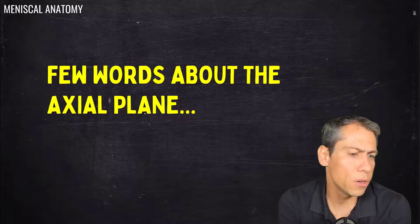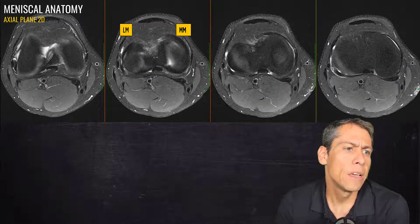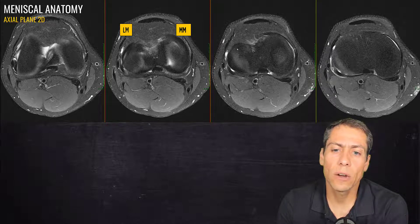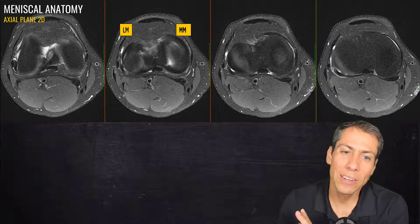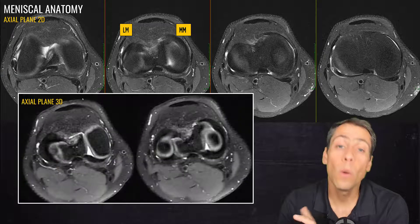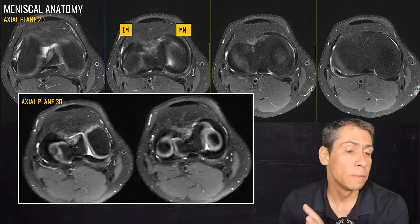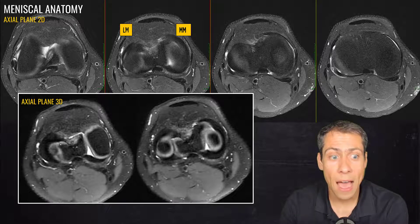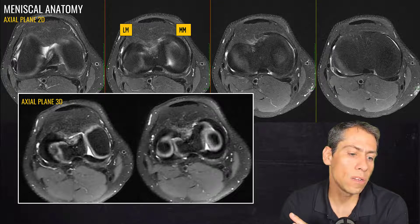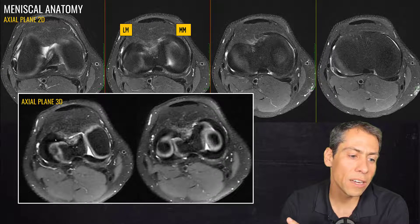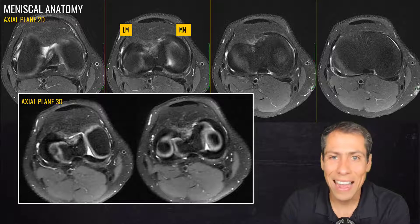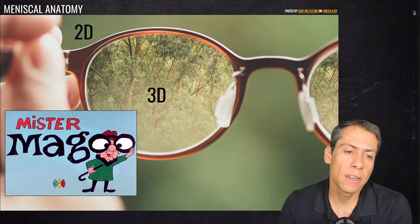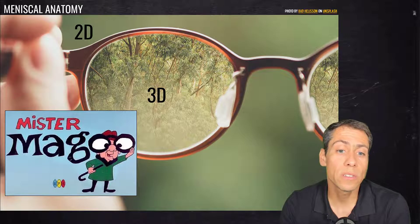Just before we finish, a few words about the axial plane. Here is an axial plane 2D sequence — we can see the lateral meniscus and the medial meniscus. Sometimes it's hard to identify the menisci with high resolution on 2D axial sequences. But now we have 3D sequences, and evaluation of the menisci on the axial plane is much better. Here you can see the lateral meniscus on a reconstructed 3D image in the axial plane, and here is the medial meniscus, including the posterior horn of the medial meniscus on this reconstructed axial plane.